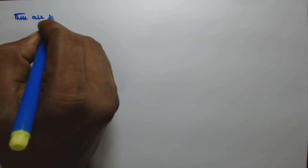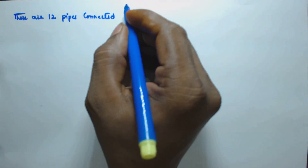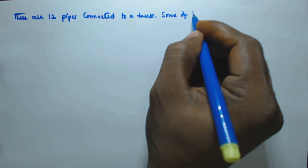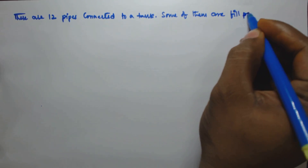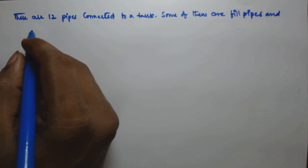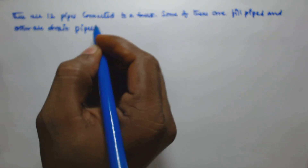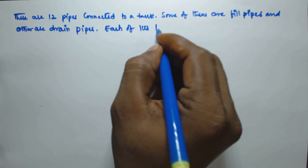Hello friends, in this video we will see another problem based on pipes and systems. The problem is: there are 12 pipes connected to a tank. Some of them are fill pipes and others are drain pipes.